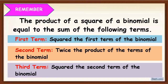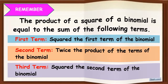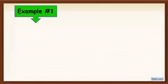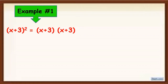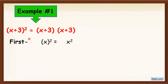To understand it further, let's have an example. x plus 3 squared — remember, it is also the same with x plus 3 times x plus 3. First, you are going to square the first term. The first term in this given is x, so you are going to square it. x squared is equal to x squared.